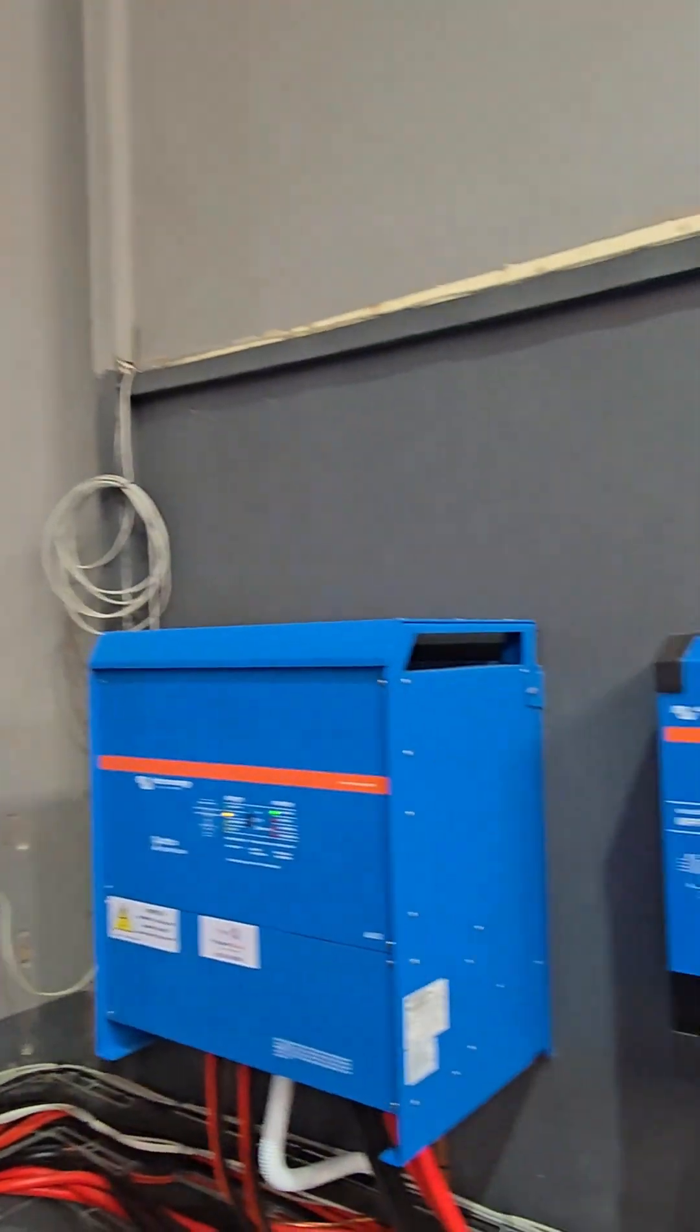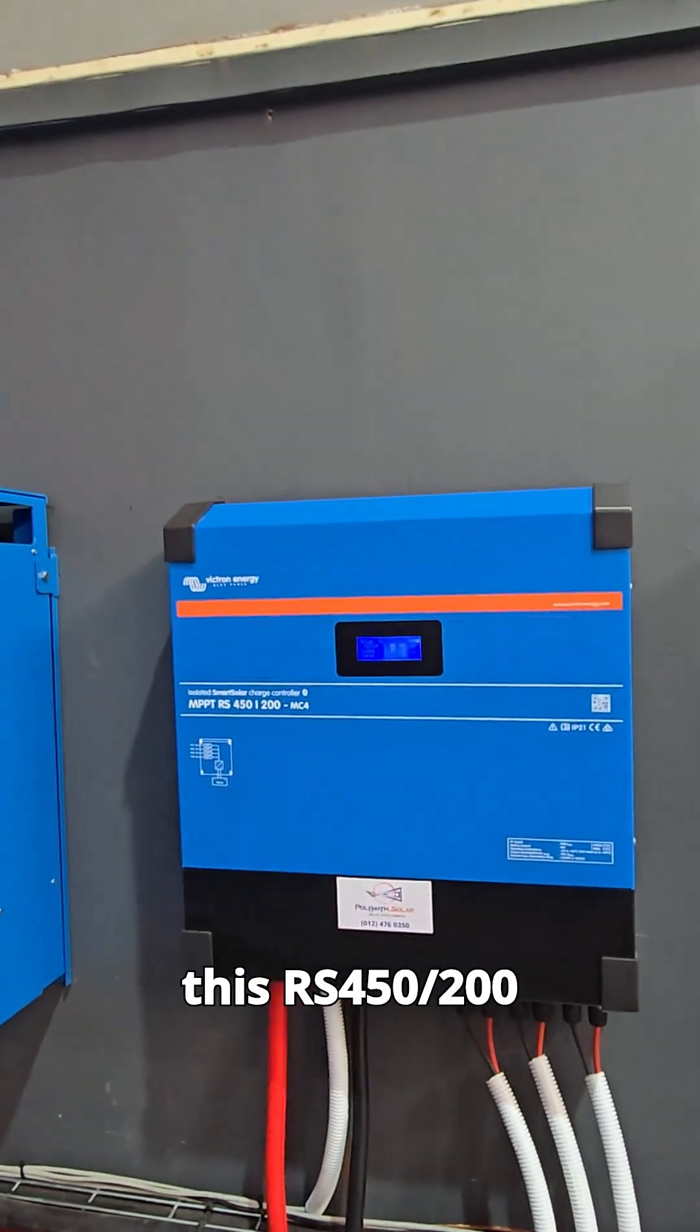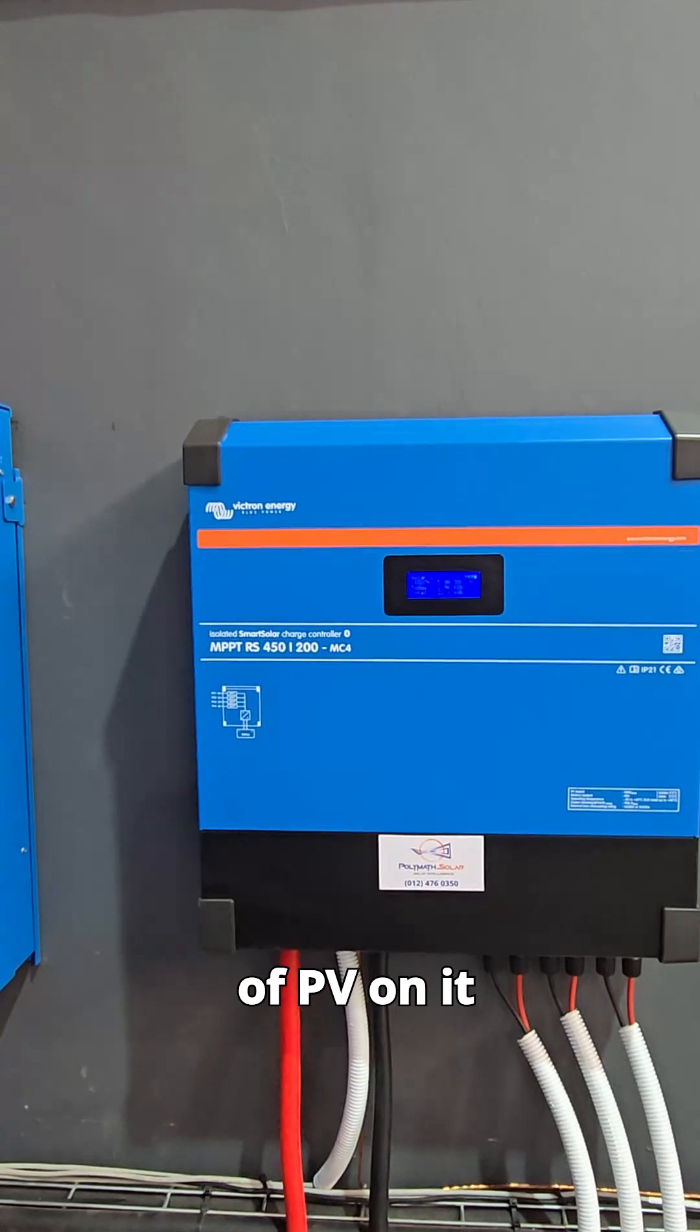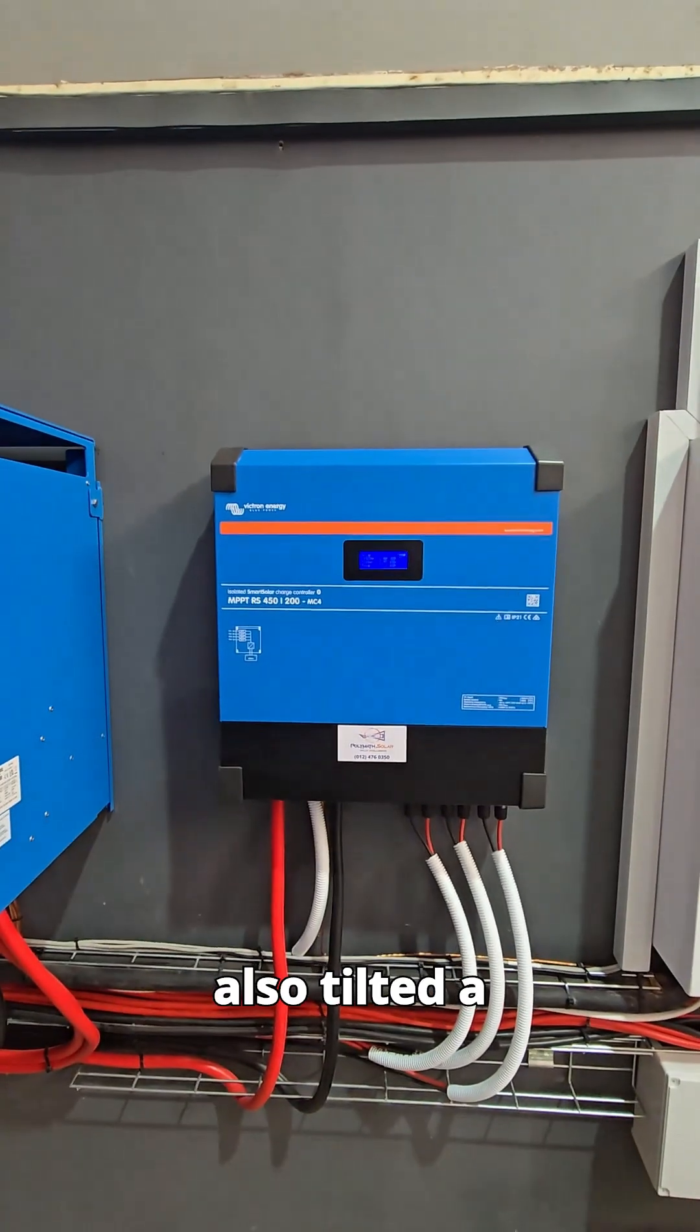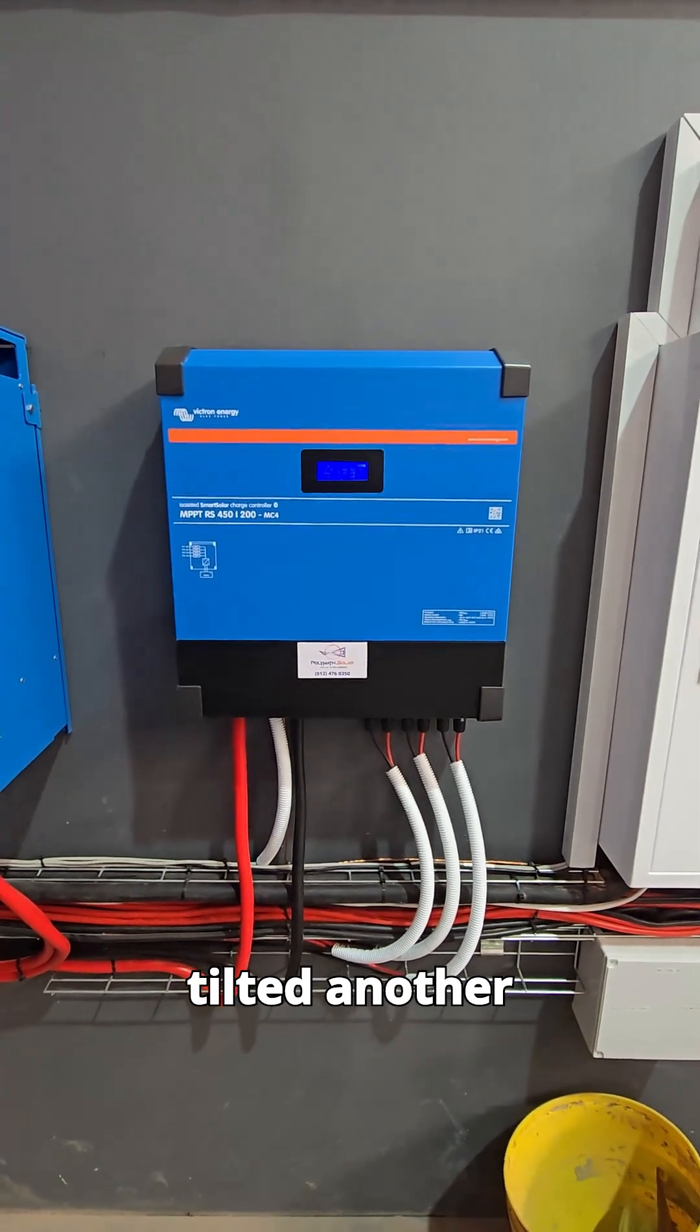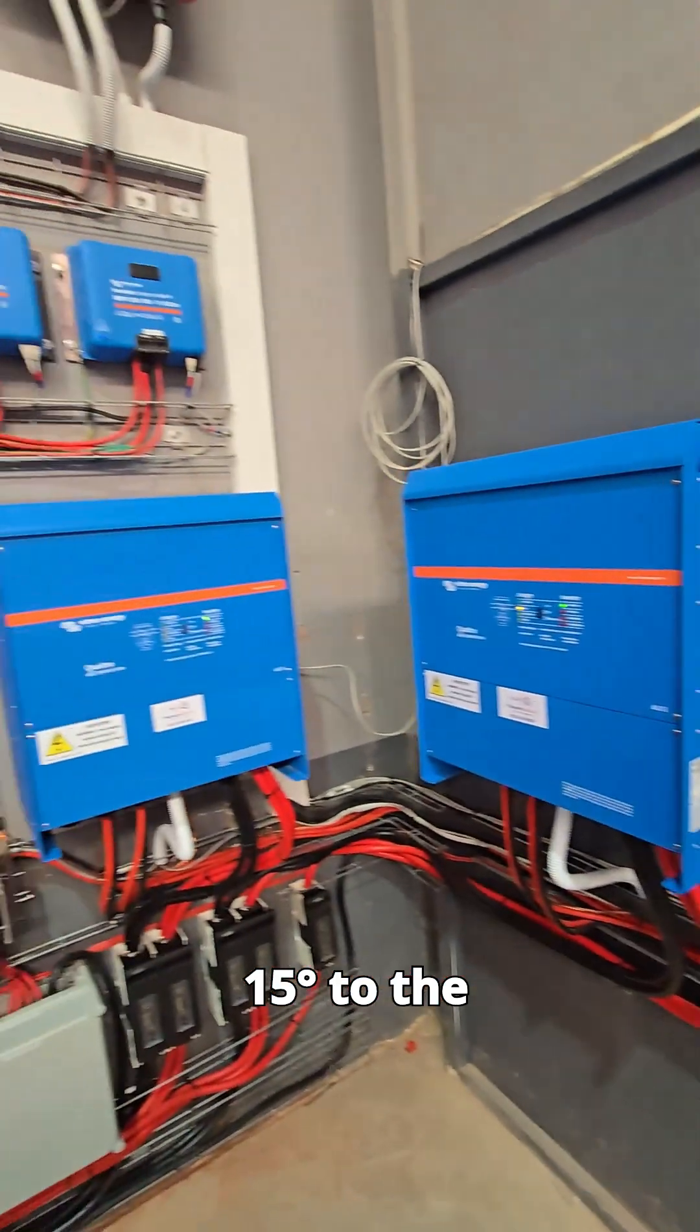and then to add to the DC, we've added this RS450-200 with some 12.5kW of PV on it, with panels also tilted facing east and west, but also tilted another 15 degrees to the north.